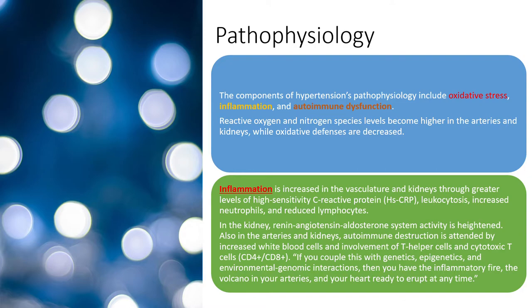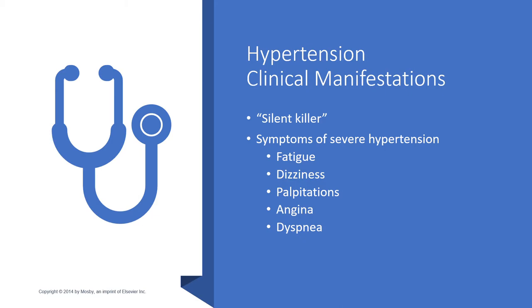Coupling genetics with epigenetics and environmental genomic interactions results in an inflammatory fire — like a volcano in your arteries ready to erupt. Medications help acutely and critically, but that inflammatory fire at the endothelial level — which creates the stretch, the hypertension, and the high blood pressure — really needs to be addressed through lifestyle approaches.